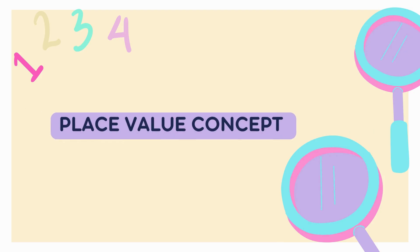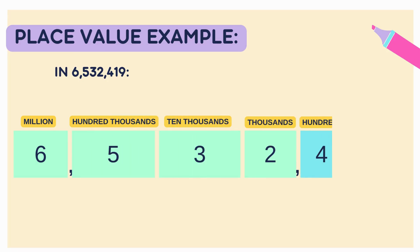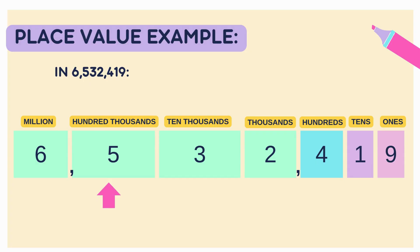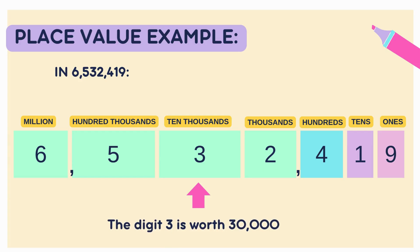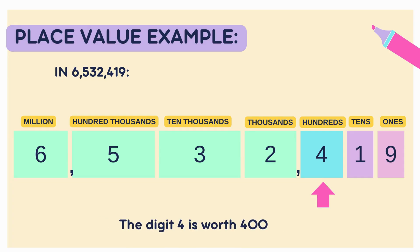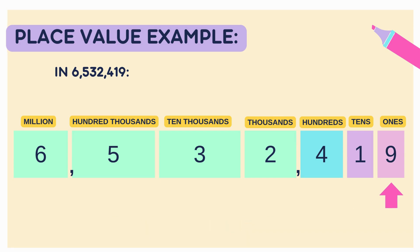Now let's understand how place value works by breaking down a big number: 6,532,419. We'll look at each digit and see what it really means based on its place. Reading from left to right: the digit 6 is in the millions place, worth 6,000,000. Next, 5 is in the hundred thousands place — that's 500,000. Then 3 in the ten thousands place, which is 30,000. The digit 2 is in the thousands place — that's 2,000. The digit 4 is in the hundreds place — so that's 400. Then 1 in the tens place gives us 10. And finally, 9 in the ones place — just 9.